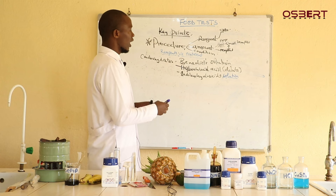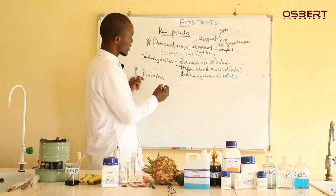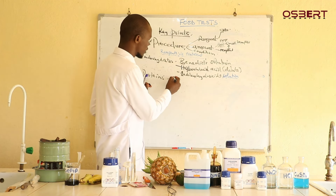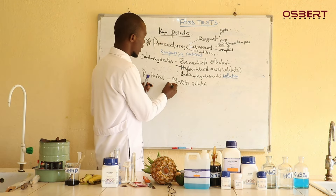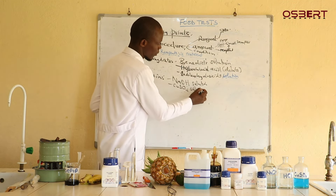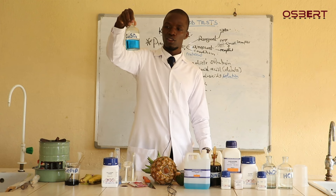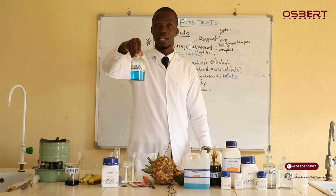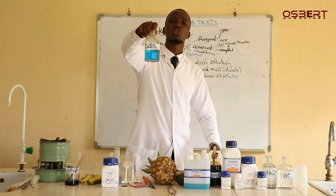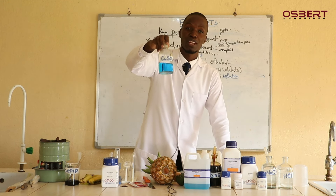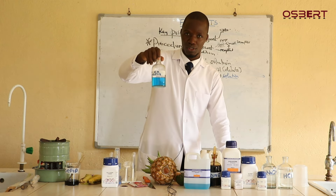Key point two: here I talked about carbohydrates, but for proteins we use different reagents. For proteins, we use sodium hydroxide solution — which I've already shown you — and copper II sulfate solution, which is in front of us here. Note that copper II sulfate solution looks similar in color to Benedict's, so you need to be careful not to mix them up. We use the solution form, not copper II sulfate crystals.